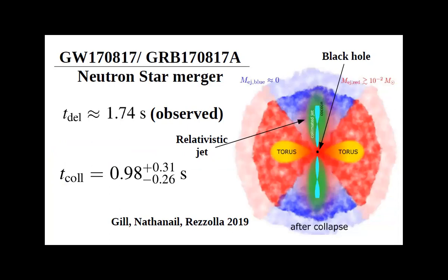The 1.74-second time delay between gravitational waves and the short gamma ray burst is informative. In that interval, the black hole must form, a jet must launch, drill through all the ejecta, and emit gamma rays that travel to the observer. Incorporating all these constraints, we found that the hypermassive neutron star collapsed to a black hole approximately one second after merger.